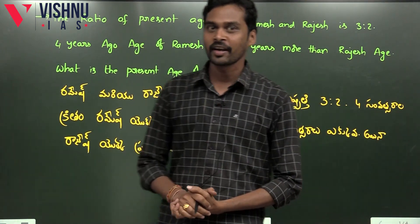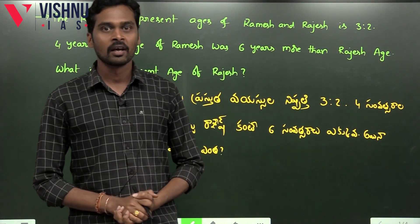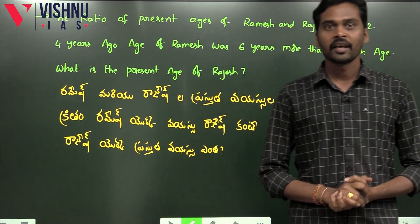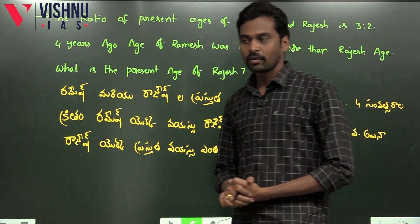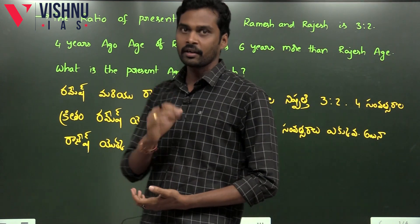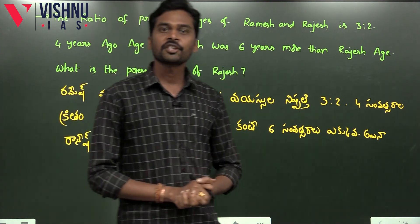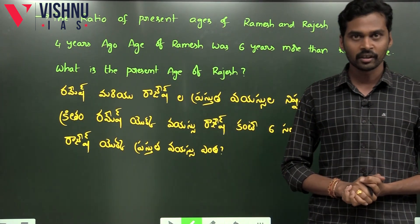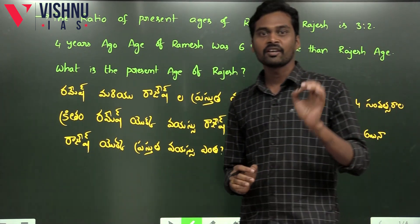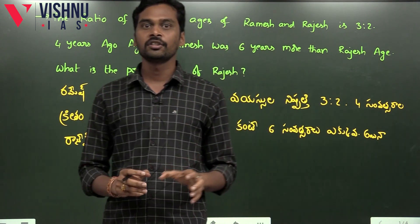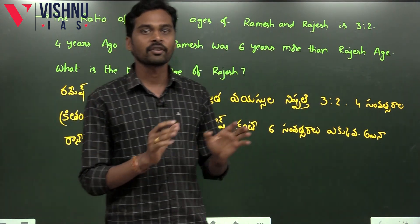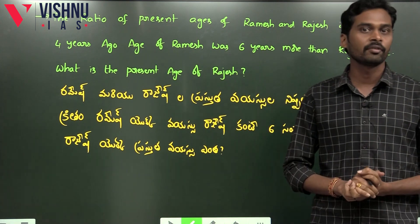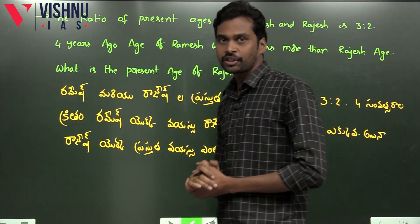Hello students, welcome to Vishnu IS Academy. In the last class, we covered what to do with data interpretation. The data interpretation section has 50 marks. We have 30 questions and 25 questions. Each question has 2 marks.